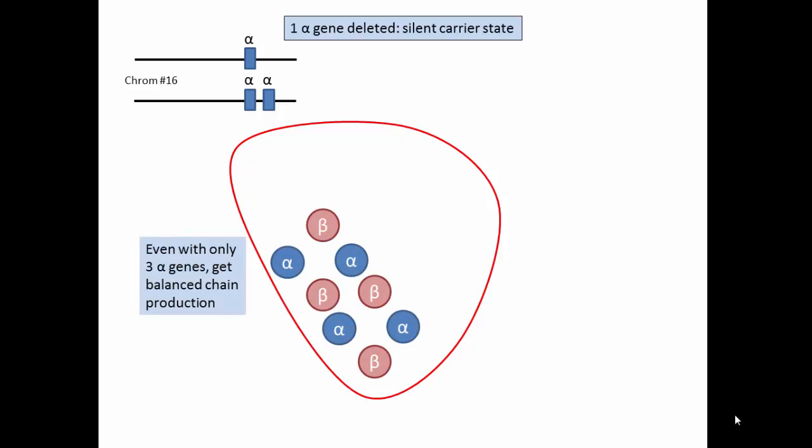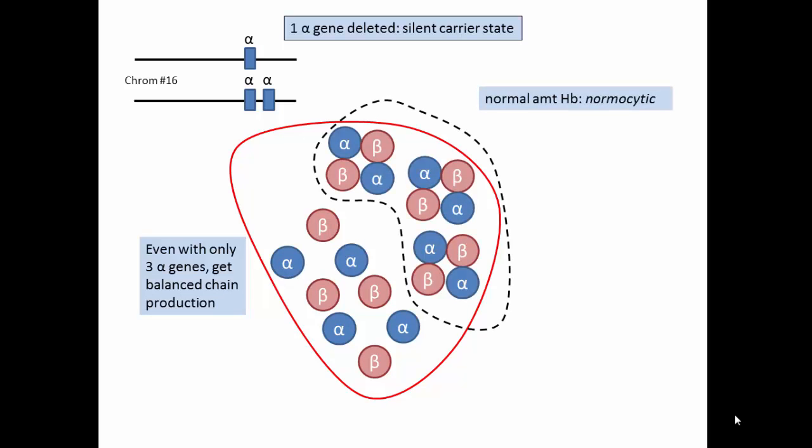Even with three alpha genes, there is essentially balanced chain production, normal amounts of hemoglobin A produced, resulting in normocytic, normal sized cells.